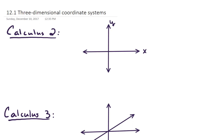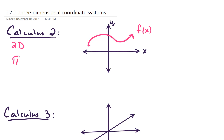Hello, in this video I'd like to talk about three-dimensional coordinate systems. So recall back in Calculus 2, we often work with functions in the xy-plane, or the Cartesian plane. So we might see a function f that looks like a curvy line, and here we're plotting in 2D. We also call this plane R2.